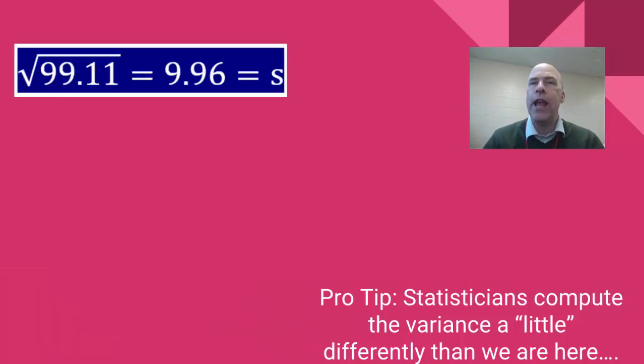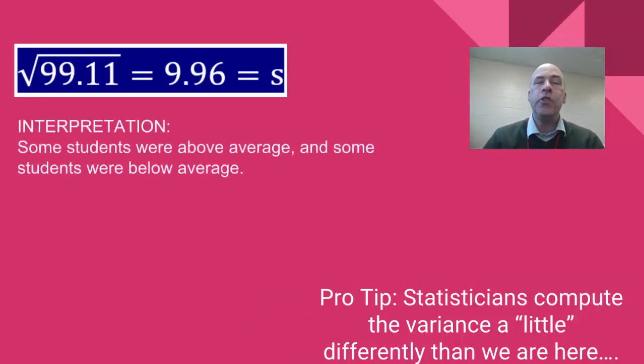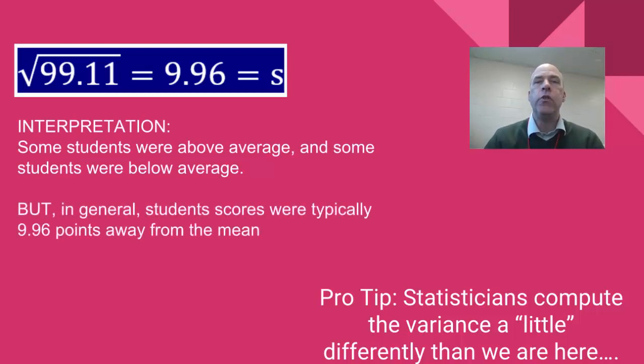So we have this number 9.96. That's the standard deviation. Well what does that number mean? Well here's the interpretation of it. Some students we know were above average. Some students we know were below average. But in general students scores were typically 9.96 points away from the mean.